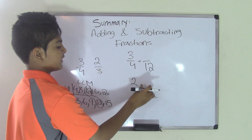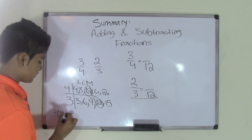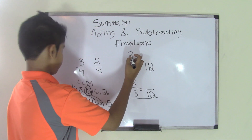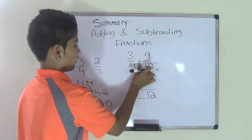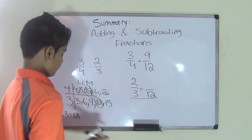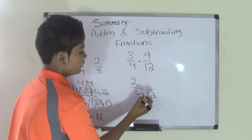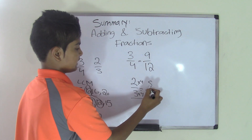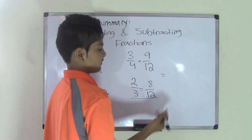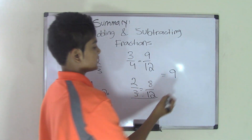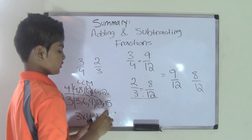Now, to find the numerators, we multiply by the same number we used to get twelve from each denominator. We know four times three is twelve, so we do three times three, which gives us nine — so the fraction becomes nine over twelve. We also know three times four is twelve, so we do two times four, which is eight — so that fraction becomes eight over twelve. Our two fractions with common denominators are nine over twelve and eight over twelve, for the original fractions three-fourths and two-thirds.